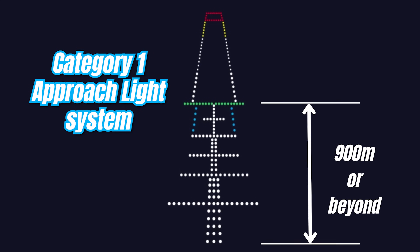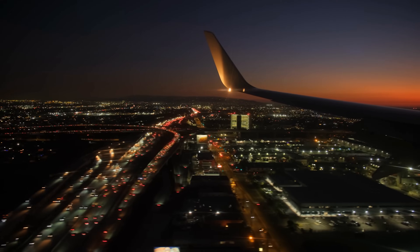Category 1 approach light system extends up to 900 meters or beyond, with multiple crossbars extending beyond 300 meters as well. To enhance runway visibility, there may be strobe lights — flashing lights that ripple towards the threshold — indicating to the pilot the direction of the threshold. These features help the pilot identify the location of the threshold in low visibility conditions as well as at night.